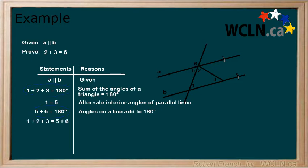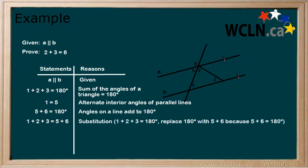By substitution, we can replace the 180 degrees with angle 5 plus angle 6. For the reason, we write substitution. Now, it looks like we are getting closer, but we still have some extra information.